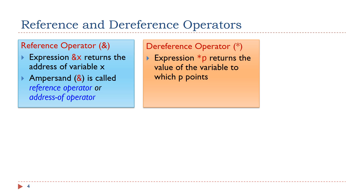The expression asterisk p returns the value of the variable to which the pointer p points. The asterisk is called the dereference operator. The symbol asterisk has different meaning in a declaration statement and in an expression.